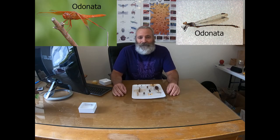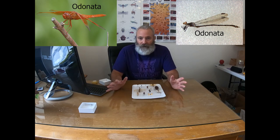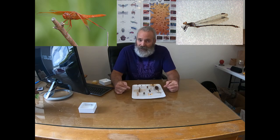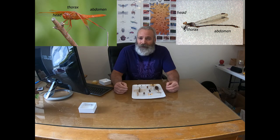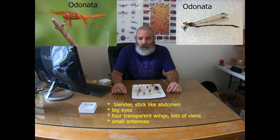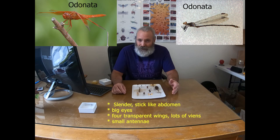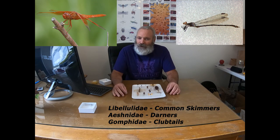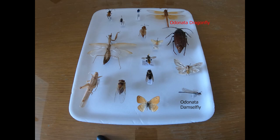Today we're going to learn about Odonata. Odonata are a specific type of insect, and all insects are placed in the kingdom Animalia, phylum Arthropoda, class Insecta, and then placed in a different order based on their physical characteristics. They all have a head, thorax, and abdomen, but there are specific insects placed in the order Odonata. When you're finished, you'll easily be able to identify maybe three families of Odonata.